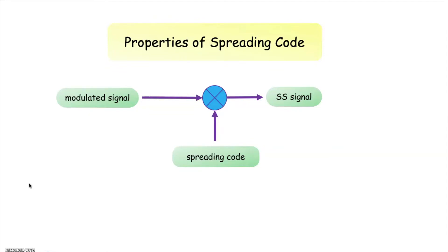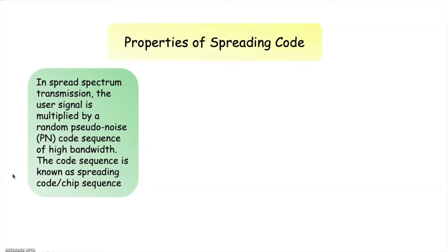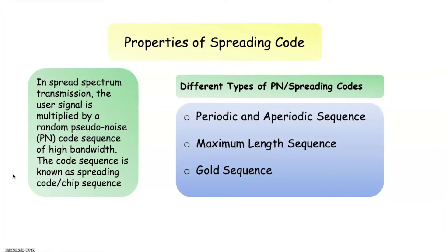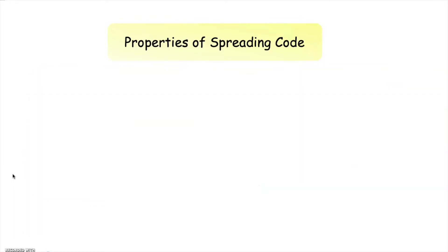In spread spectrum transmission, the user signal is multiplied by a random pseudo noise code sequence of high bandwidth. The code sequence is known as spreading code or shift sequence. Different types of spreading codes are periodic and aperiodic sequence, maximum length sequence, Gold sequence, etc.